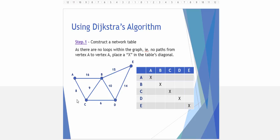First of all, from this diagram we can see there's no loops. There's no edge going from A to A or from B to B. So we place an X through the main diagonal of this table.